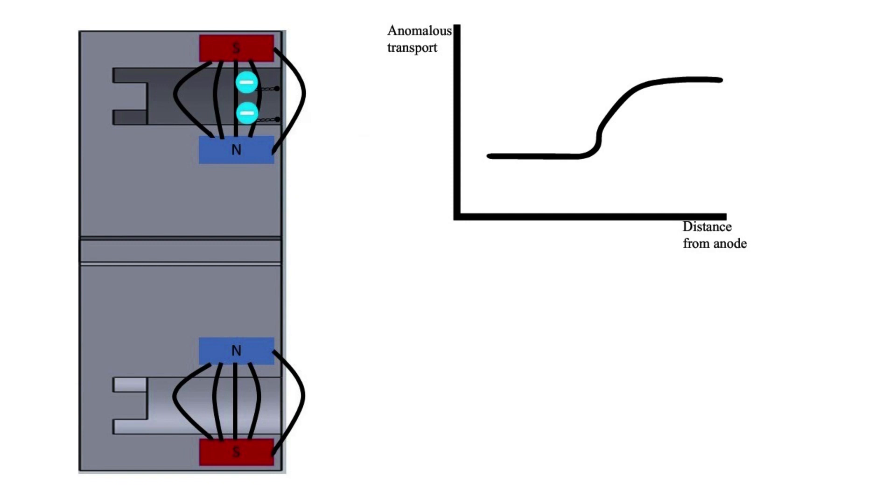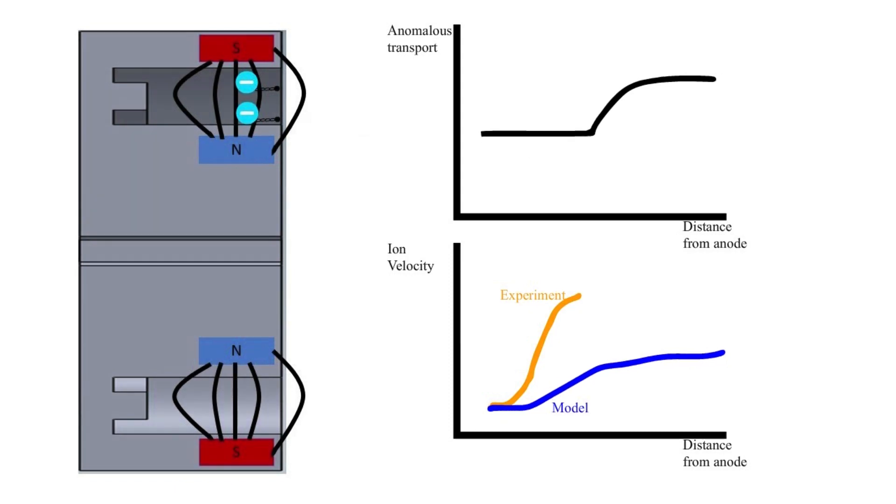This function is known as the anomalous frequency curve, and an example is shown on the plot here. There are a few different measurements we use to infer the anomalous frequency curve, but the gold standard is the ion velocity curve. Traditionally, an engineer will adjust the shape and scale of this curve until the model's ion velocity curve matches the experimental curve.